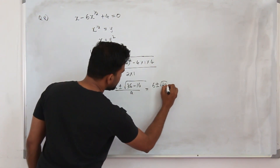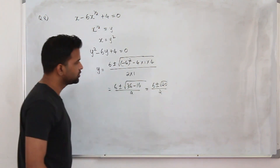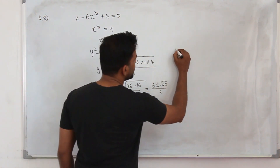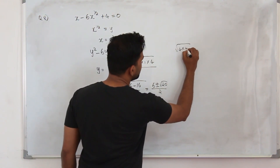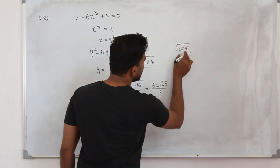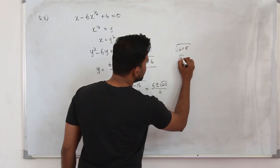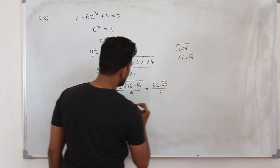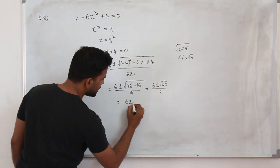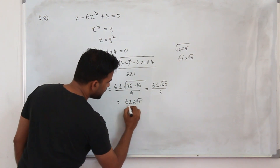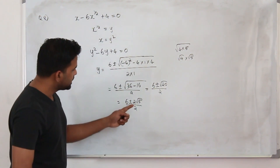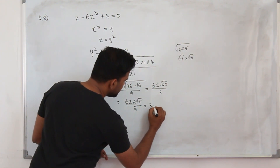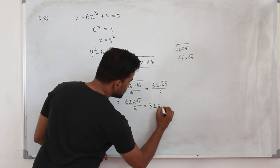That gives 6 plus or minus square root of 20, divided by 2. If you have square root of 20, you can write it as square root of 4 times 5, and split them using laws of indices. Square root of 4 is 2, so you can write it as 6 plus or minus 2 root 5, divided by 2. Take 2 as a common factor and cancel — your values are 3 plus or minus root 5.